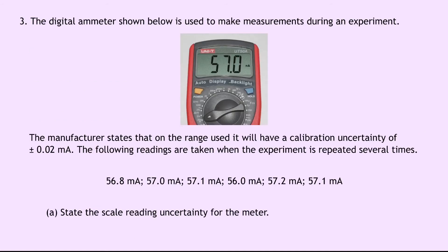Question three is a bit longer, and it says the digital ammeter shown below is used to make measurements during an experiment. We can see on the screen there we've got a reading of 57.0 milliamps. The manufacturer states that on the range used it will have a calibration uncertainty of plus or minus 0.02 milliamps. The following readings are taken when the experiment is repeated several times, giving us 6 sets of readings in milliamps.